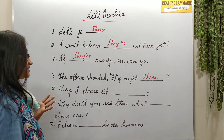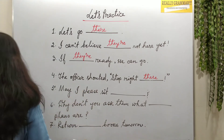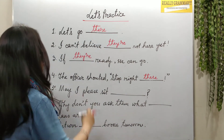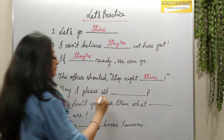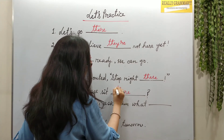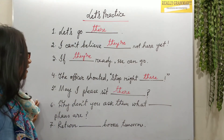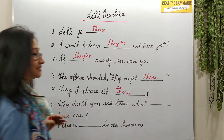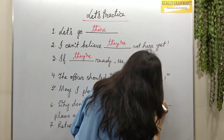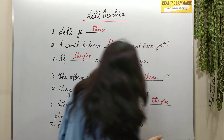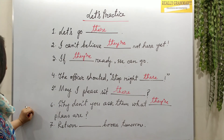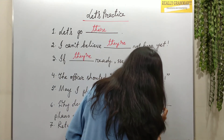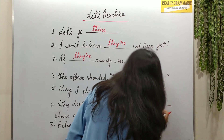'May I please see blank' — talking about a place — T-H-E-R-E: 'May I please see there.' 'Why don't you ask them what blank plans are?' — this is about possession — T-H-E-I-R: 'Why don't you ask them what their plans are?'